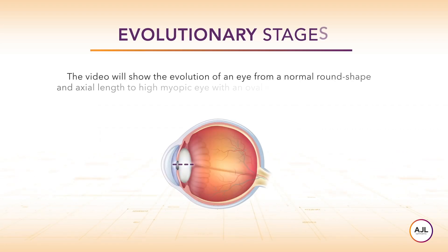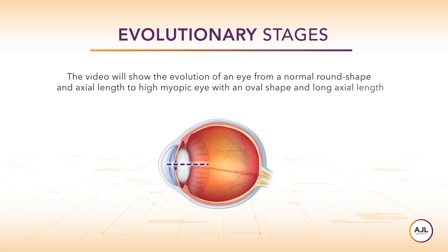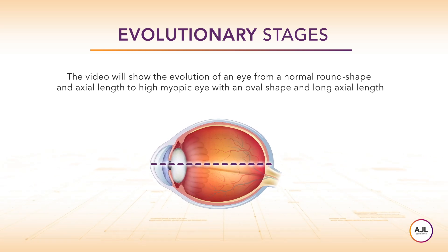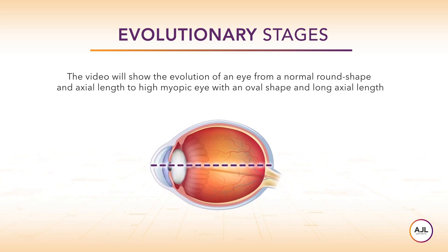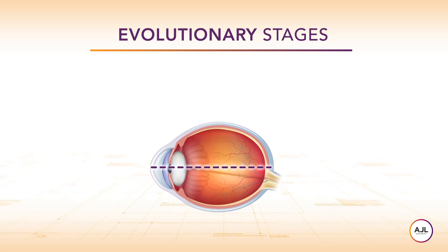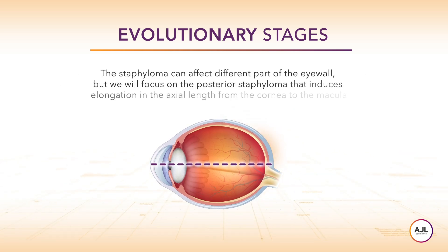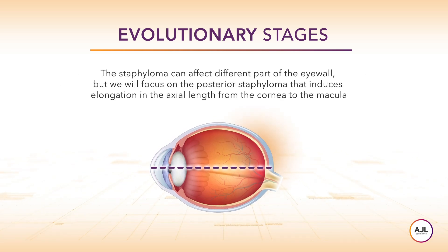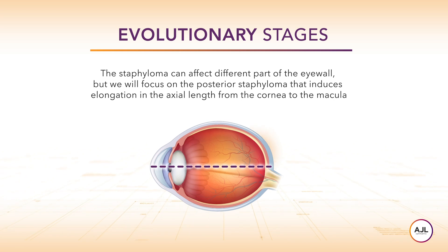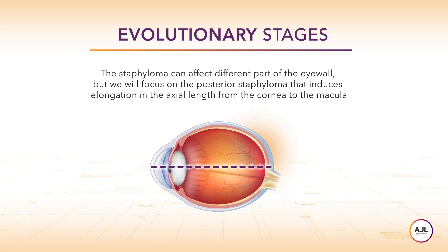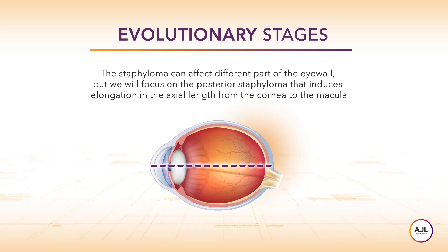The video will show the evolution of an eye from a normal round shape and axial length to a high myopic eye with an oval shape and long axial length. The staphyloma can affect different parts of the eye wall, but we will focus on the posterior staphyloma that induces elongation in the axial length from the cornea to the macula.